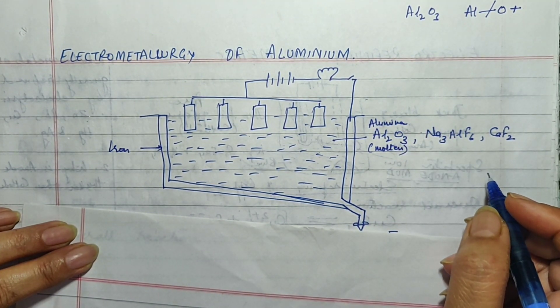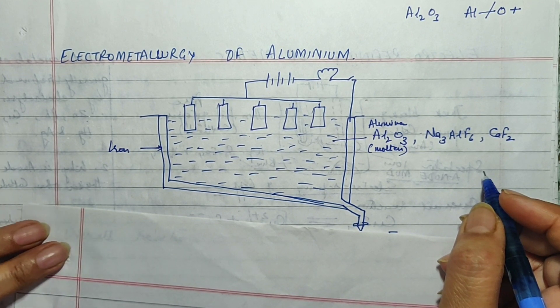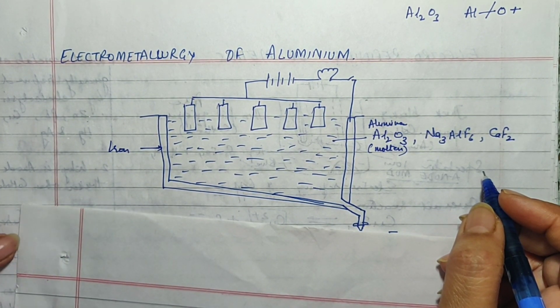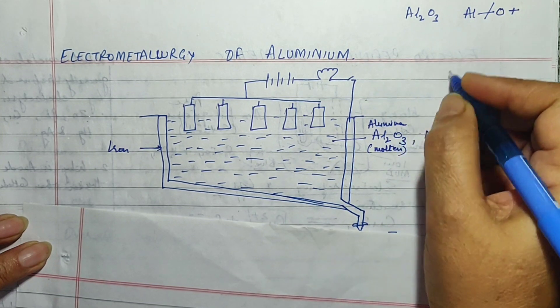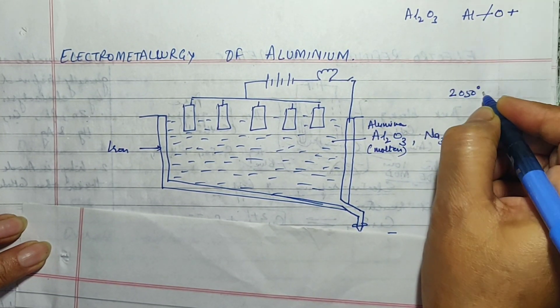Now initially the metal aluminium was very expensive and it was one of the rare metals just like gold we have these days. The point was that aluminium had a very high melting point. It would melt at 2050 degree celsius which was very high.